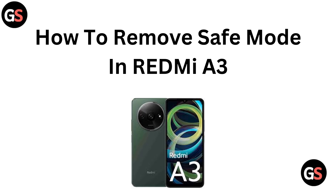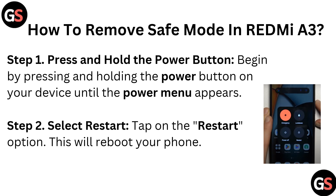Today in this video we are going to talk about how to remove safe mode in Redmi A3. Step 1: press and hold the power button on your device until the power menu appears. Step 2: select restart — tap on the restart option, this will reboot your phone.